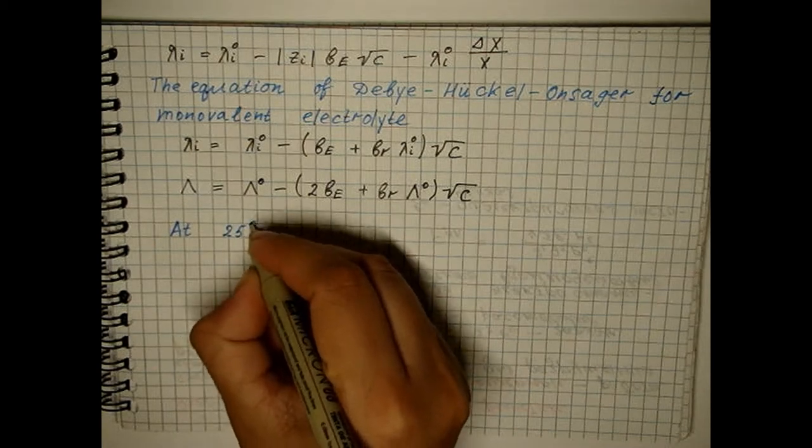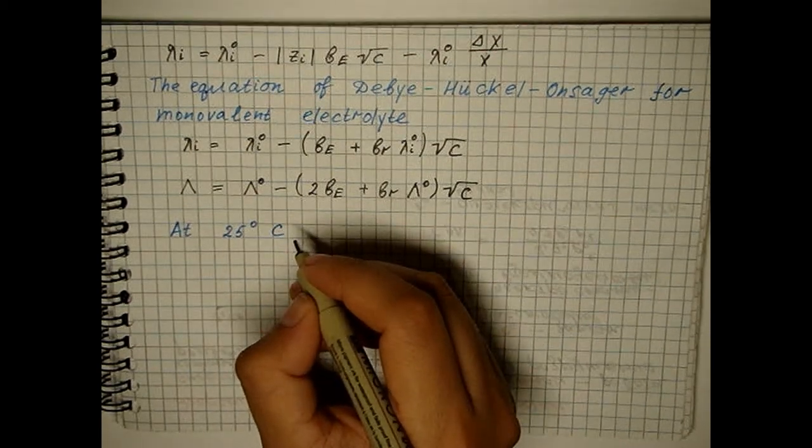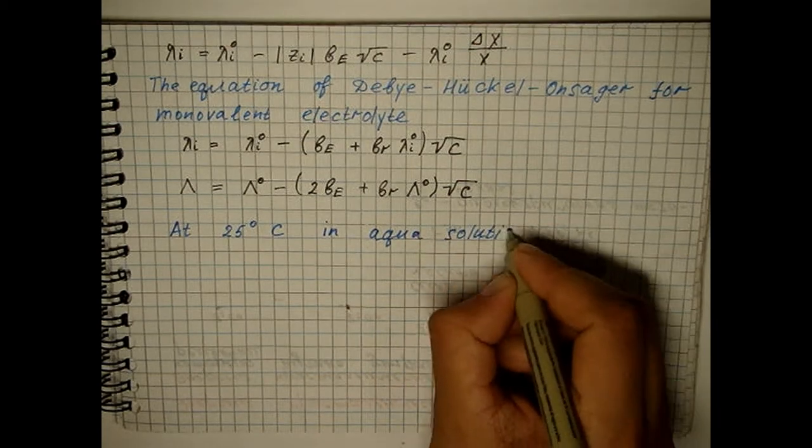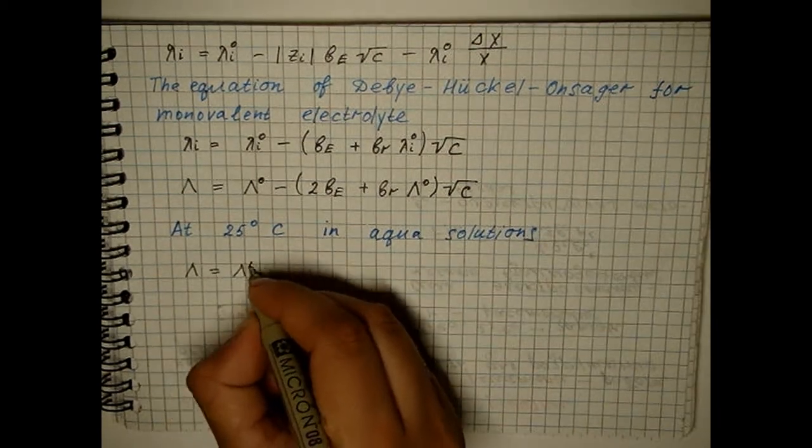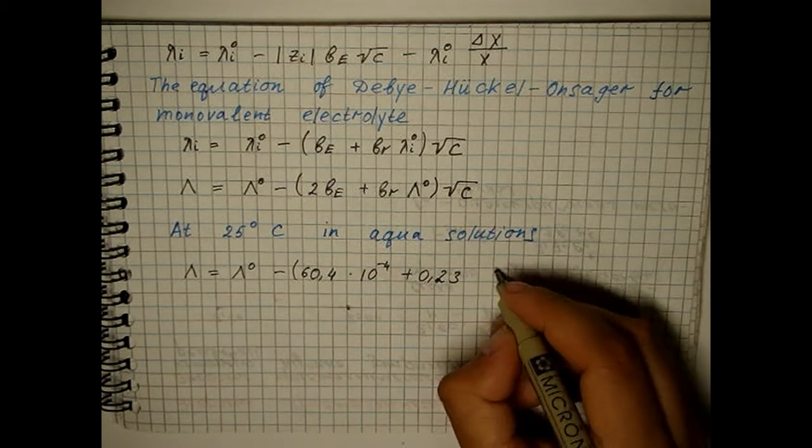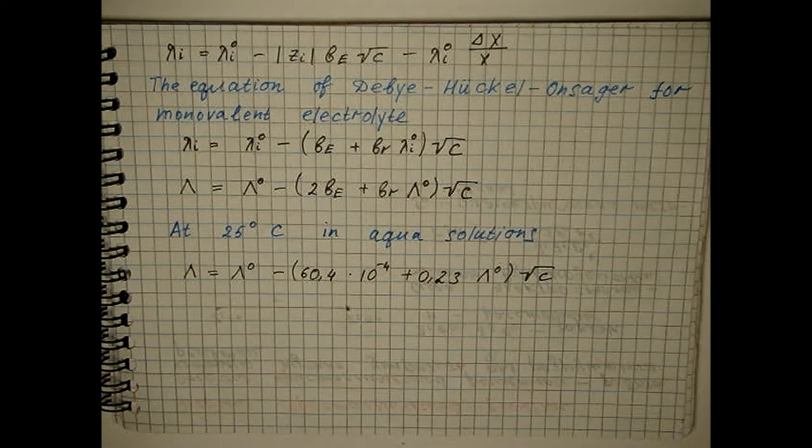In aqua solutions at 95 degrees Celsius the Debye Heukel-Leon-Ziger equation takes the form. Thus,